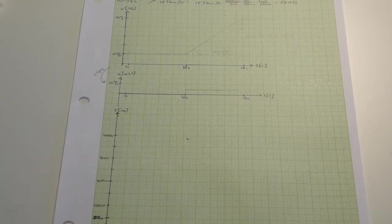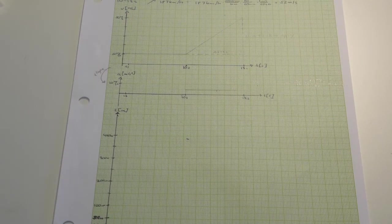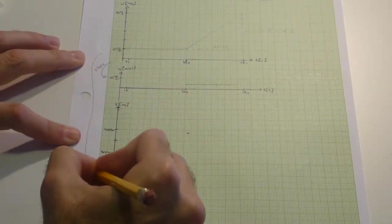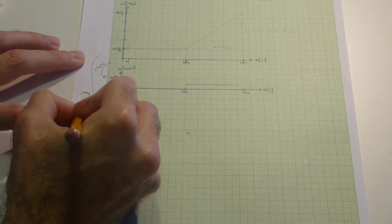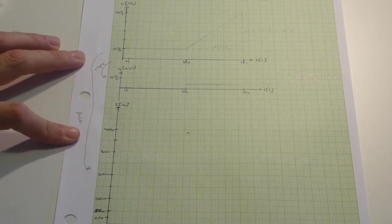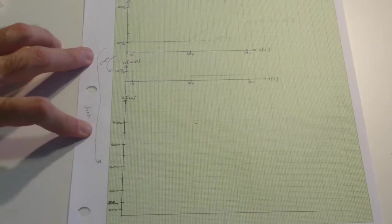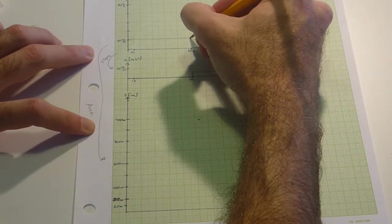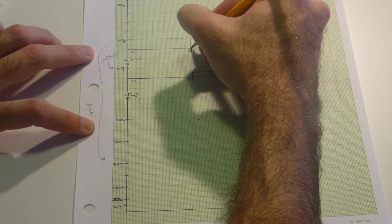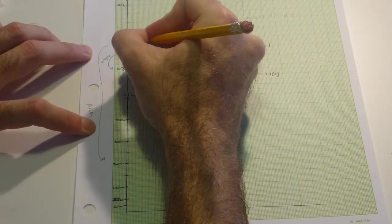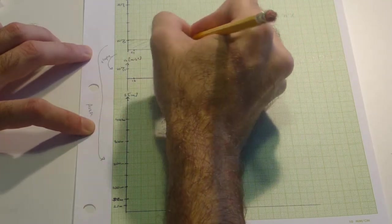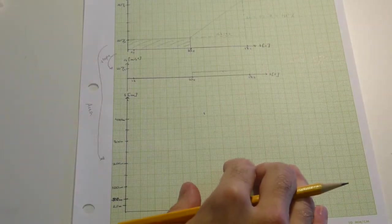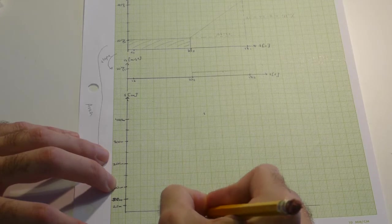Now let's look at the ST graph. The ST graph is the area under the VT graph. For the first 10 seconds we are at constant velocity. So we can actually calculate pretty easily where we ended up at 10 seconds. Here we set our 10 seconds.